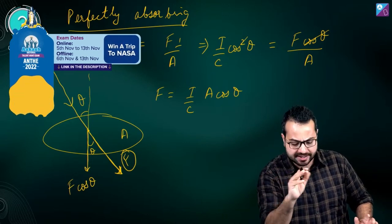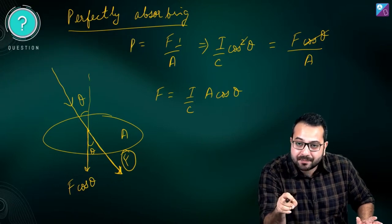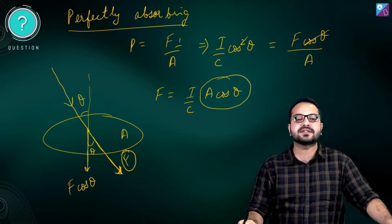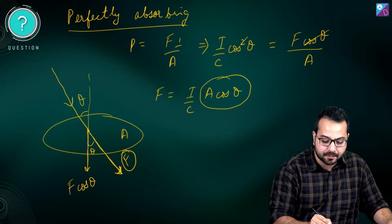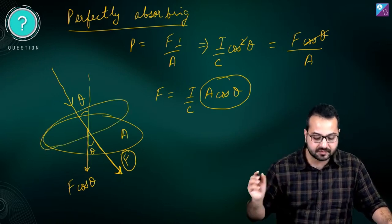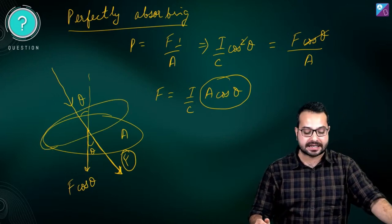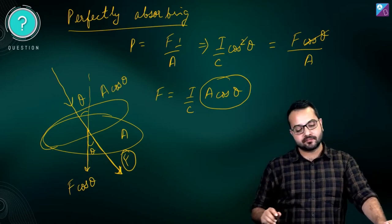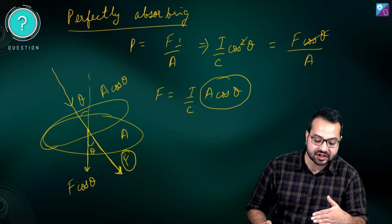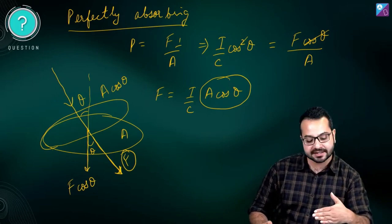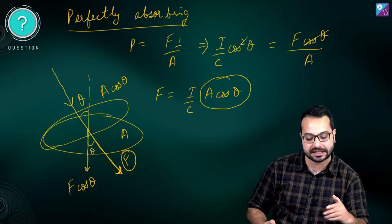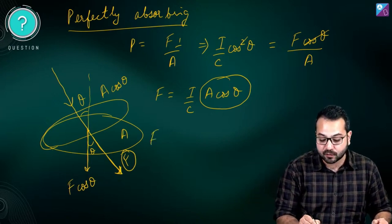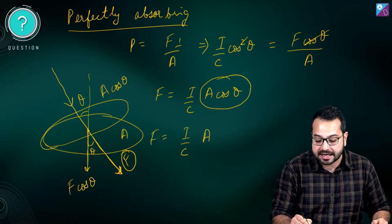A shortcut here: what is A × cosθ? If you take the projection of the surface area perpendicular to the direction of light, that projection equals A × cosθ. So the force exerted equals I/C × (area of projection).